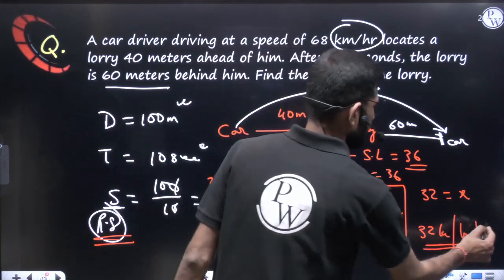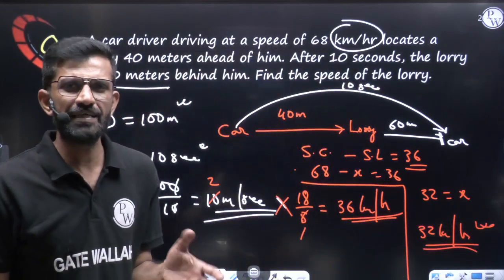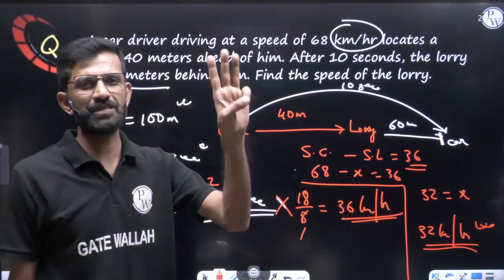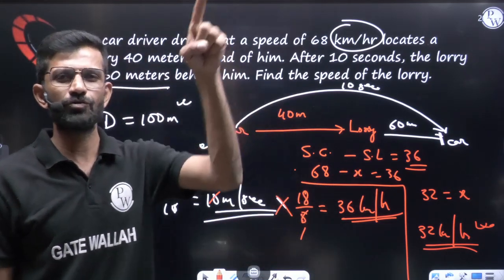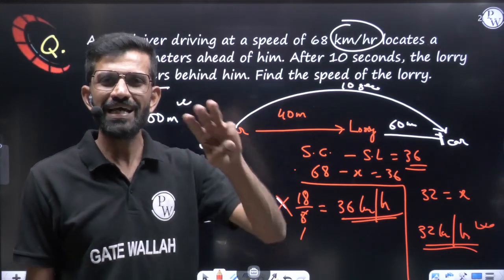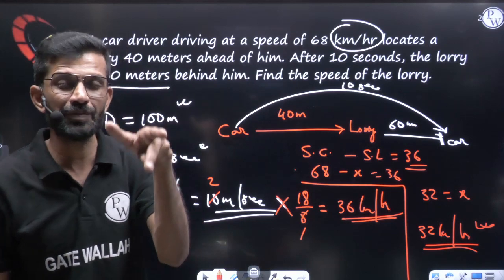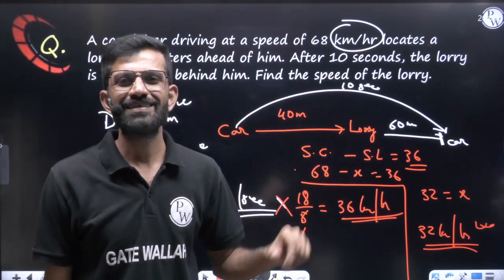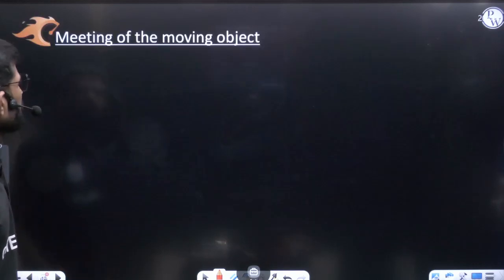No matter how the question is asked, everything is based on the same three formulas: D = S×T, S = D/T, T = D/S — plus the concepts of average speed and relative speed, and always making units consistent.